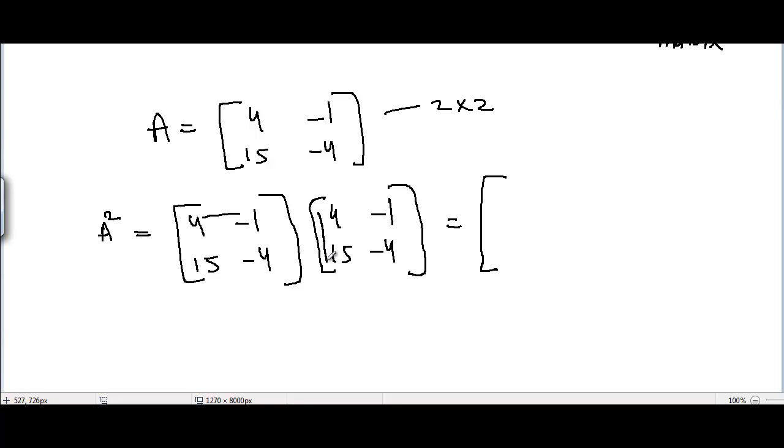4 times 4 is 16, and -1 times 15 is -15. First row, second column: 4 times -1 is -4, and -1 times -4 is +4.